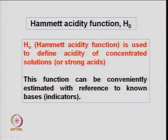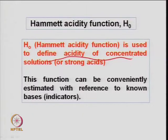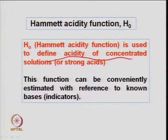Hammett acidity — basically the pH when you have a dilute solution — is related to the acidity and pH. It is used to define the acidity of a concentrated solution or strong acids. For solids it is difficult, but for solution it can be determined. This function can be estimated with reference to known bases — some indicator like pyridine — and for different acids this function will be different.